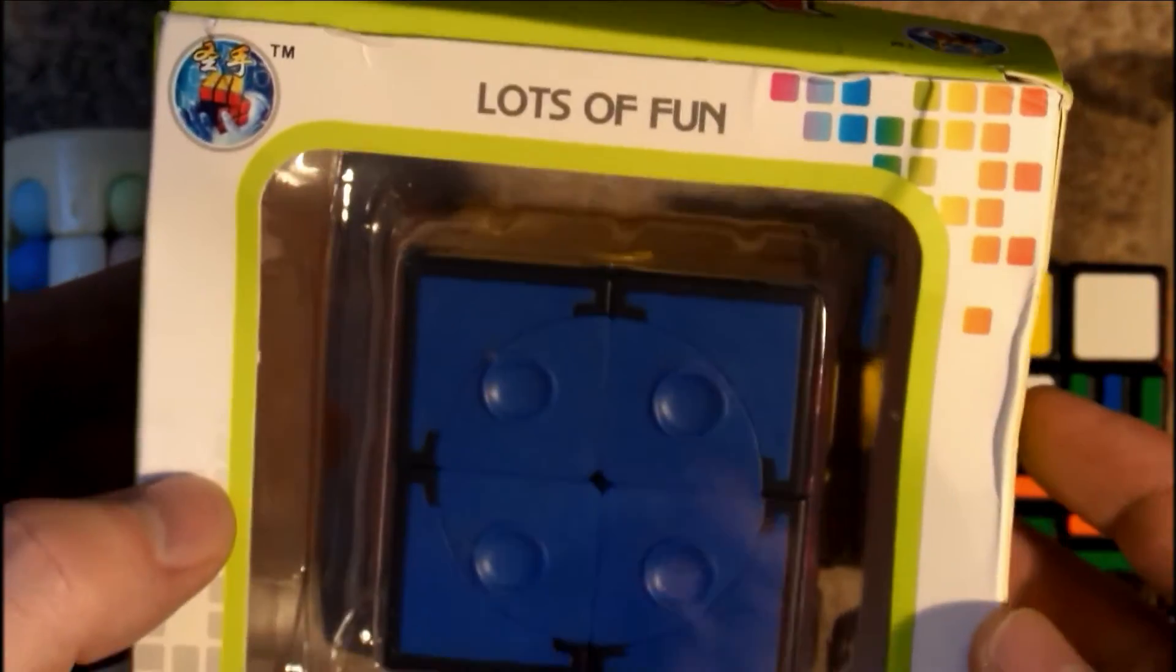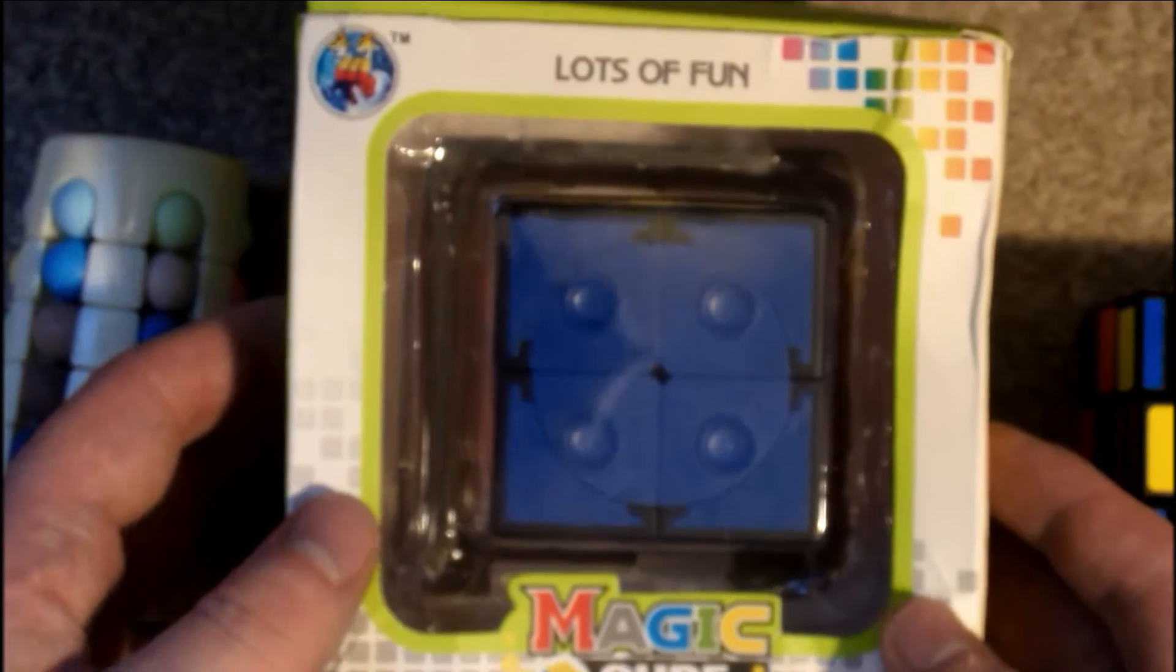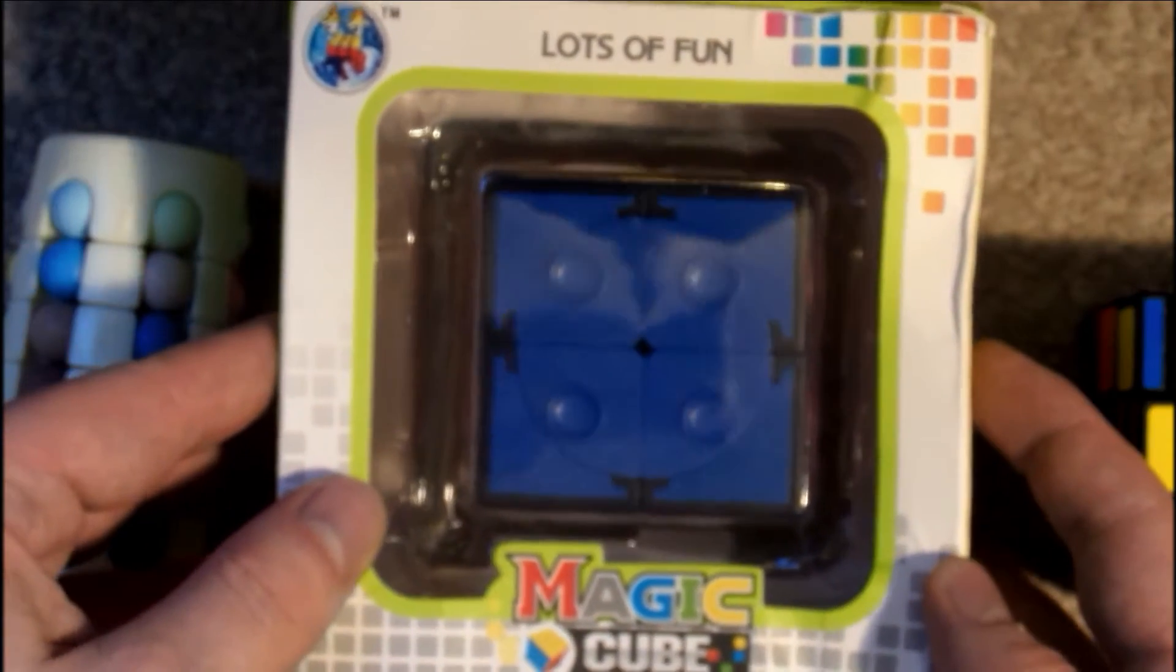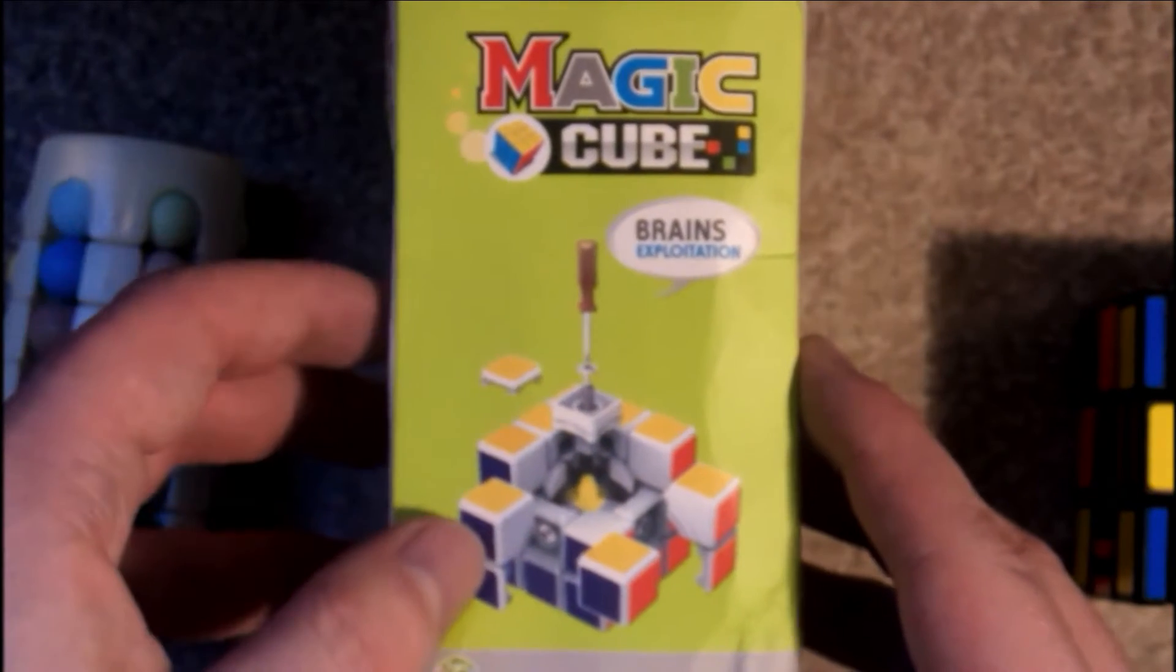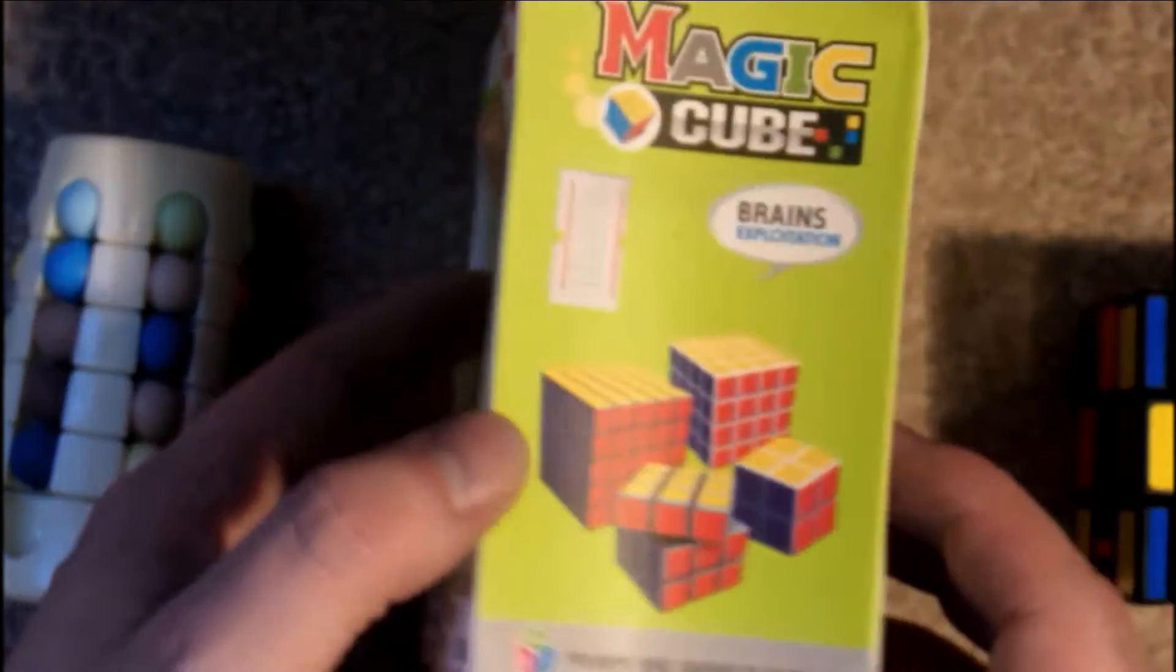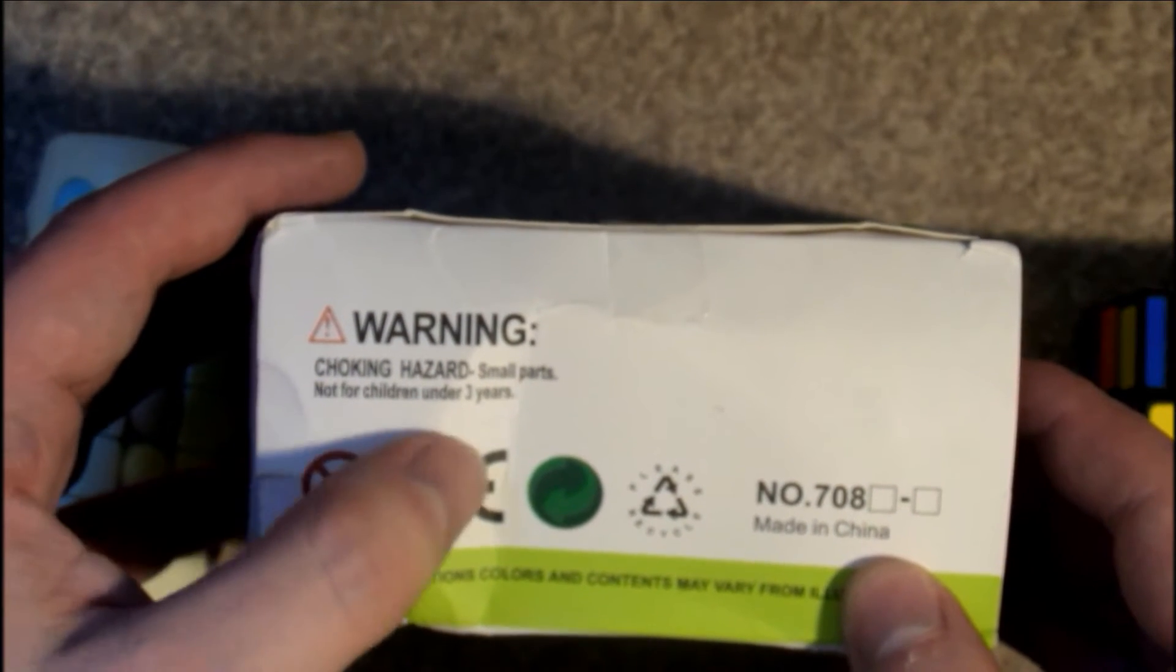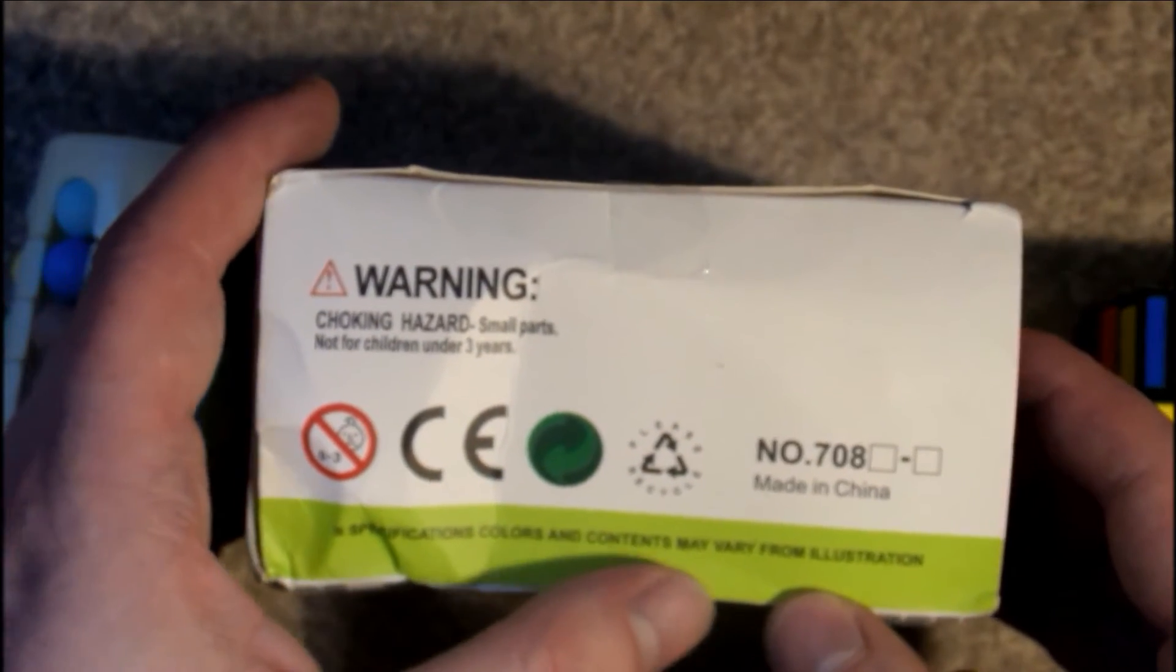Lastly we have got the Shengshou Crazy 2x2. So as you can see it says lots of fun there. Magic Cube. Brains Exploitation. Modern and elegant in fashion. You've got a screwdriver taking apart a 3x3 there. And yeah. Warning. Choking hazard. Small parts. Not suitable for children under 3 years. Made in China.